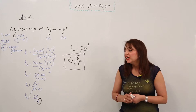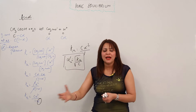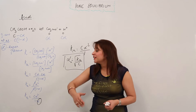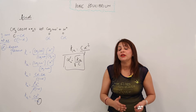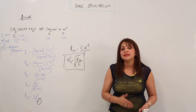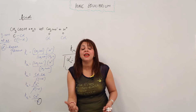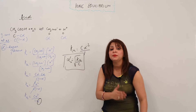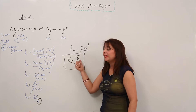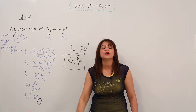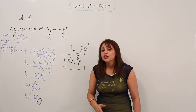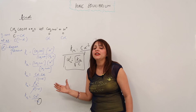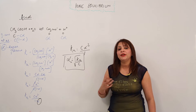By looking at this relation, you might notice it is the same expression we derived for a weak electrolyte in Ostwald's dilution law. The only difference is that here it is Ka instead of K, and the degree of dissociation is specifically for an acid rather than a general electrolyte. Otherwise, the expression is essentially the same.